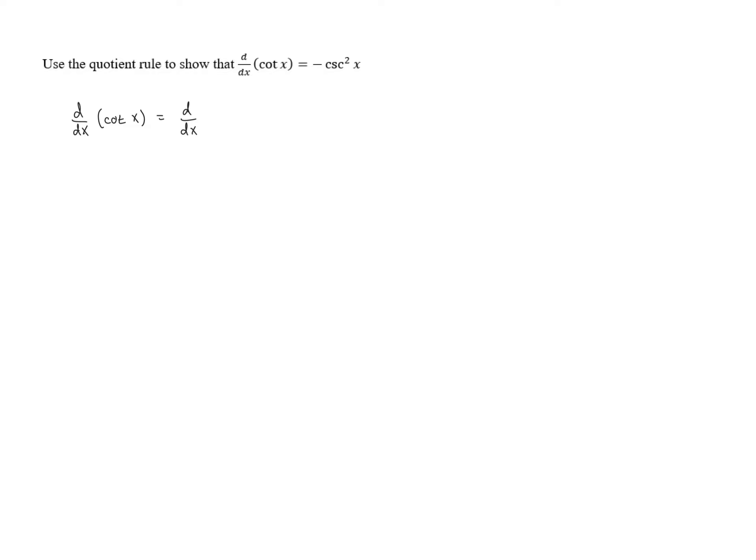And we know that tangent is sine over cosine. Cotangent is cosine over sine. So we've got cosine of x over sine of x, and then we can use the quotient rule here.